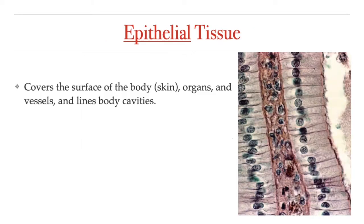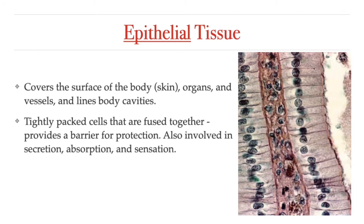Let's start with epithelial tissue. When you think of epithelial tissue, think of skin, because our skin is made up of epithelial tissue. But not just our skin — epithelial tissue lines the cavities of our body and covers the surface of our entire body, as well as the surface of our vessels and our organs. They're made up of tightly packed cells, which allows them to provide several important functions, like protection from pathogens or the sun.